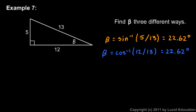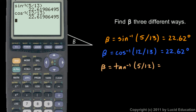The inverse tangent should give us the same value also. Here's angle beta — tangent is opposite over adjacent, so the tangent of beta is 5 over 12. So beta will be the inverse tangent of 5 over 12. On the calculator, inverse tangent of 5 twelfths gives 22.62 degrees.